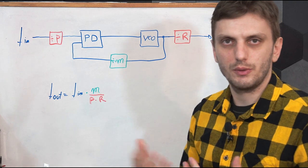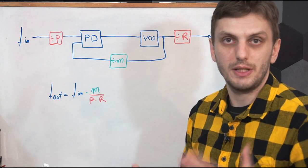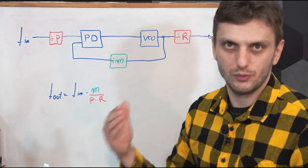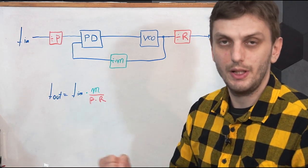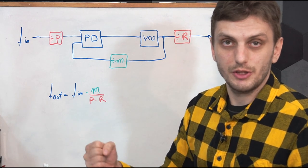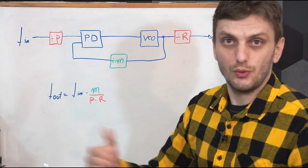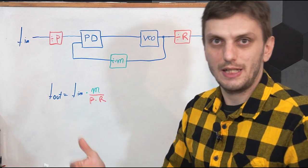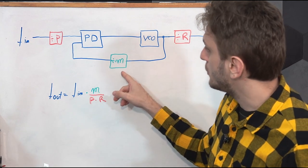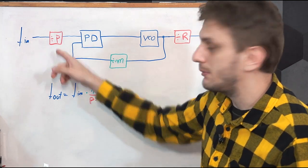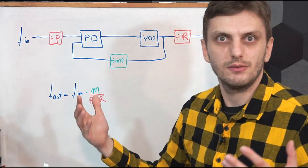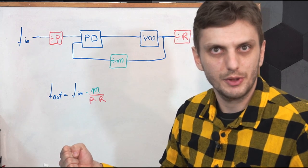So if I want to obtain 1.33 MHz out of 1 MHz, it's important to notice that 1.33 is 4/3 times 1 MHz — so I need to multiply by 4, divide by 3, and then I get my 1.33 MHz.